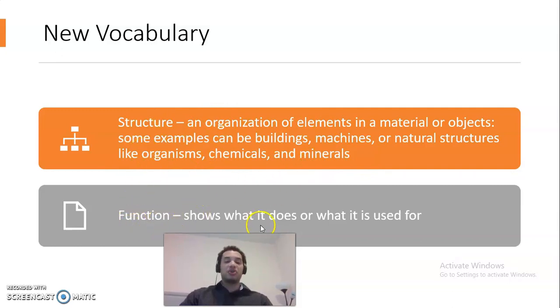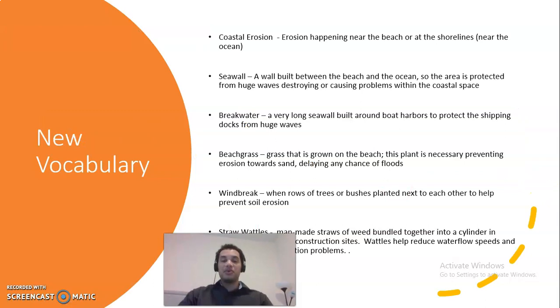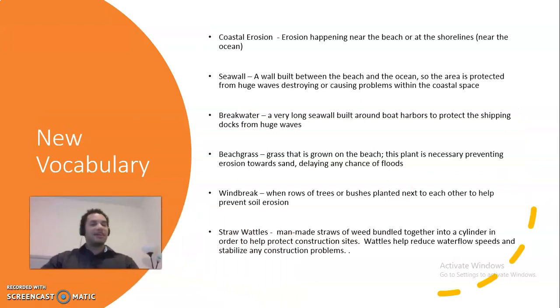Ooh, we got more words. A lot of words today. So this one is called coastal erosion. Everyone say coastal erosion. So a coastal erosion is an erosion happening near the beach or at the shorelines near the ocean. Seawall is a wall built between the beach and the ocean. So the area is protected from huge waves destroying or causing problems within the coastal space. Breakwater. Breakwater is a very long sea wall built around boat harbors to protect the shipping docks from huge waves.